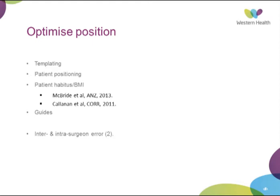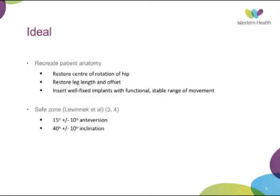Despite all of this, there is still inter- and intra-surgeon error in positioning the acetabular component. Ideally in hip replacement we want to restore the center of rotation of the hip, restore leg length and offset, and insert well-fixed implants with a functional stable range of movement. The safe zone defined by Lewinnek is 15 degrees of anteversion plus or minus 10 degrees, and 40 degrees of abduction or inclination plus or minus 10 degrees. In a series of 300 total hip replacements within these parameters, he had a dislocation rate of 1.5%, versus 6.5% outside, not accounting for long-term polyethylene wear.